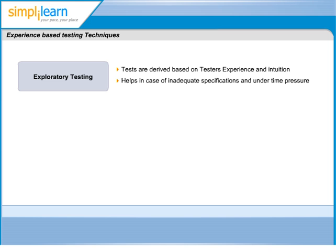For example, the tester may decide to use boundary value analysis but will think through and test the most important boundary values without necessarily writing them down. Some notes will be written during the exploratory testing session so that a report can be produced afterwards.